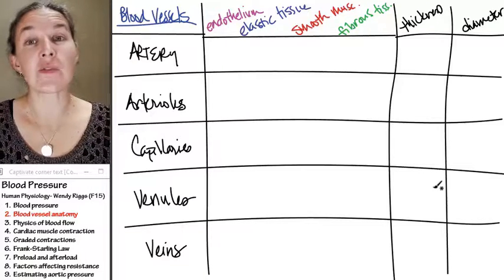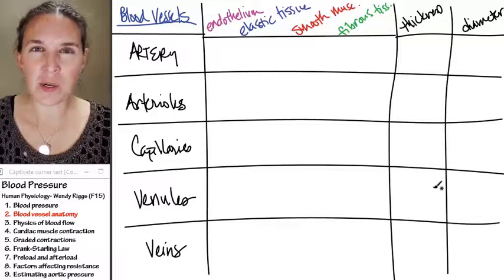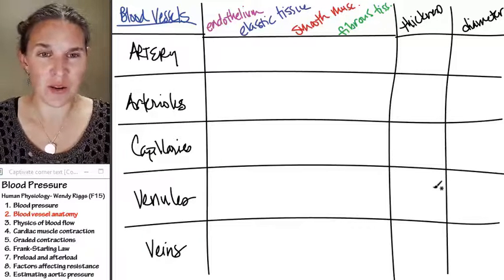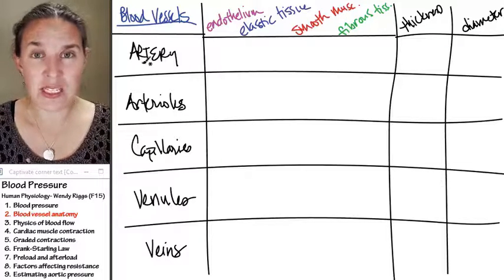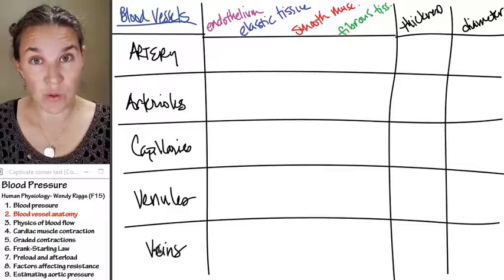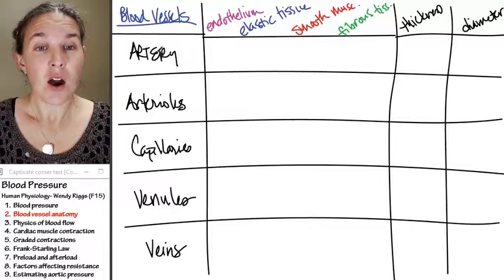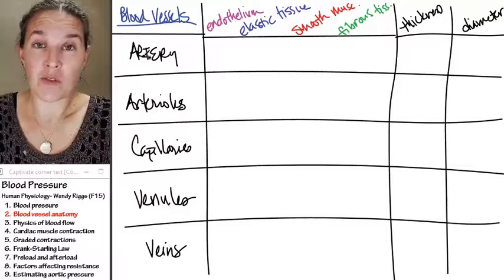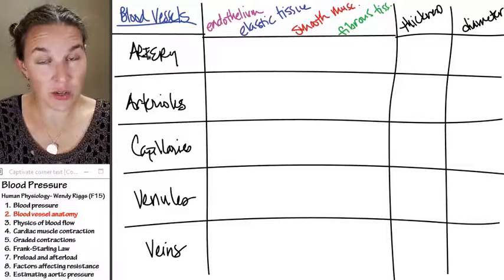There are five different types of blood vessels that we're going to look at, and we've already talked about the biggies. Arteries carry blood away from the heart while veins carry blood to the heart. Arteries, when they carry blood away from the heart, they branch into arterioles.